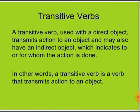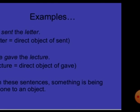A transitive verb is a verb used with a direct object. It transmits action to an object and may also have an indirect object, which indicates to or for whom the action is done. In other words, a transitive verb is a verb that transmits action to an object.